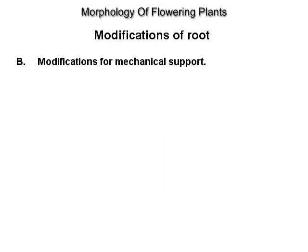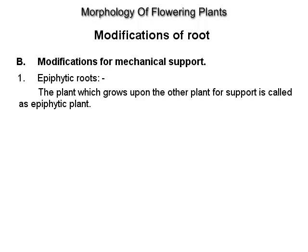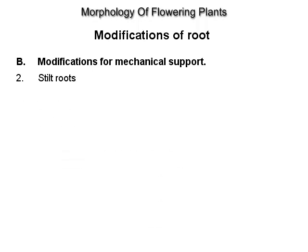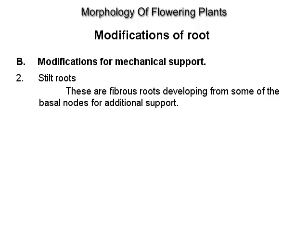Modifications for mechanical support. Epiphytic roots: the plant which grows upon another plant for support is called an epiphytic plant, example Vanda. Tilt roots: these are fibrous roots developing from some of the basal nodes for additional support, example maize and sugarcane.